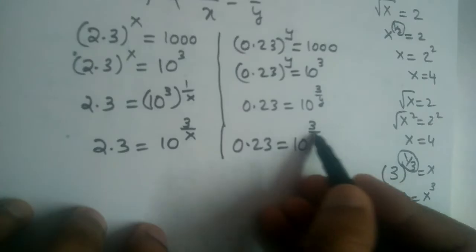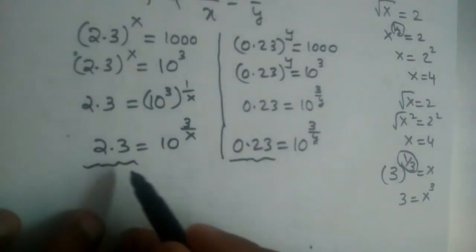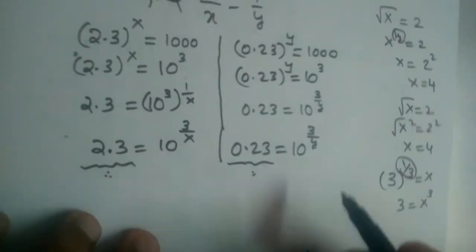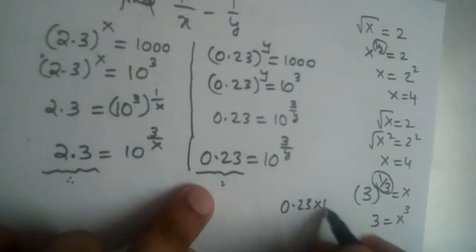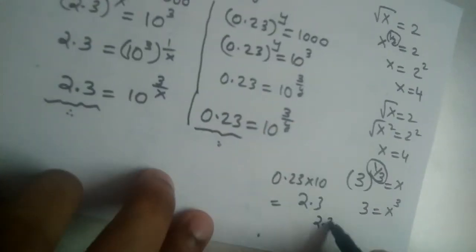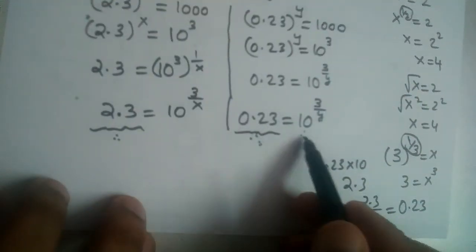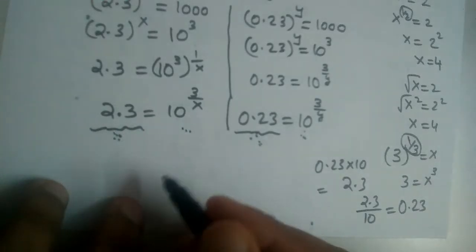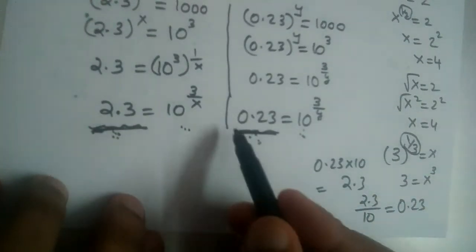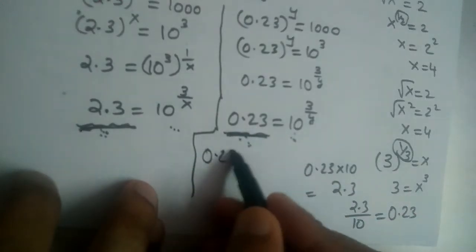Now we need to make the two base terms equal — we have 0.23 and 2.3. We can multiply 0.23 by 10 to get 2.3, so we multiply both sides of the 0.23 equation by 10. This gives 0.23 times 10 equals 10 power 3/y times 10.